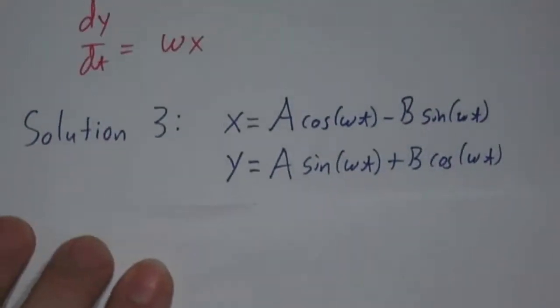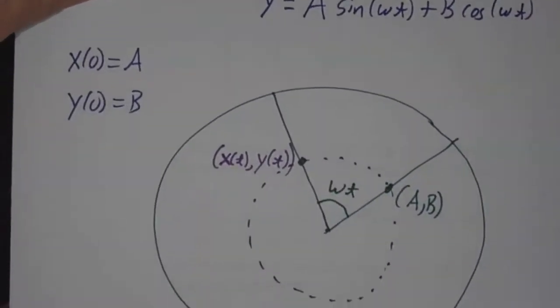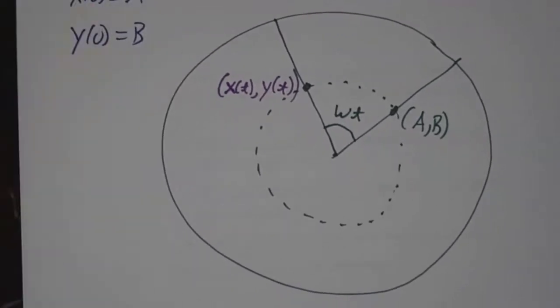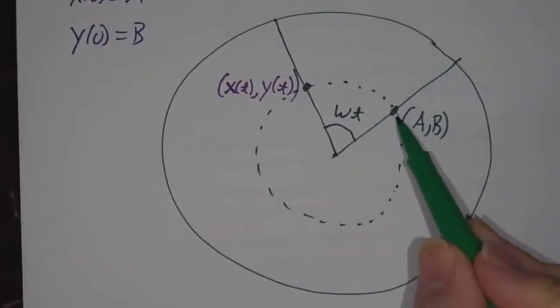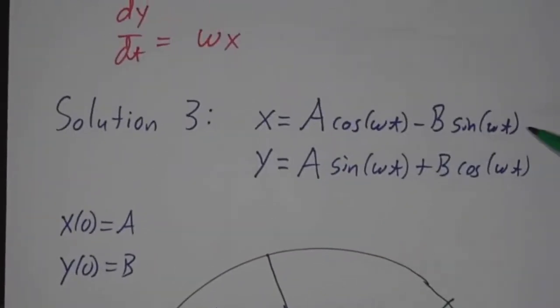Another solution is to pick whatever constants you like. Let's call them A and B. And let x be A cosine minus B sine. And let y be A sine plus B cosine. And when I say sine and cosine, I mean sine of omega t and cosine of omega t. If you take A equals 1 and B equals 0, that was our first solution. If you take A equals 0 and B equals 1, that was our second solution. And once again, you can just take your derivatives, and what this describes is what happens if you start at a point (A, B). And again, you rotate by angle omega t, and you wind up with this.